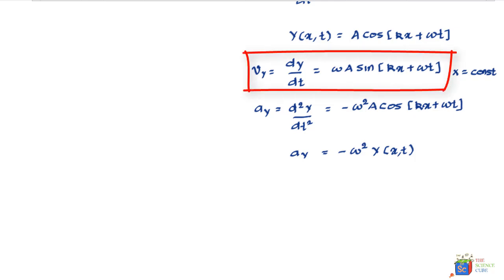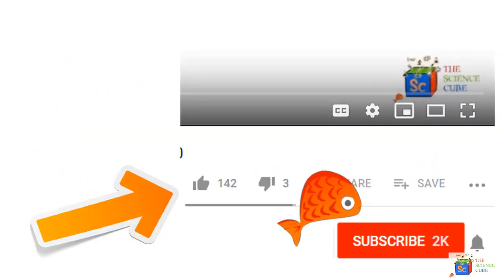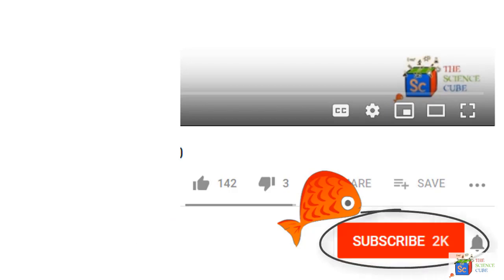This equation shows that the transverse velocity of a particle varies with time as expected for simple harmonic motion. The maximum transverse particle speed is ωA, since the sine function attains a maximum value of one. Also note that the maximum particle speed can be greater than, less than, or equal to the wave speed. If you liked this video, please give it a thumbs up and subscribe to this channel for more interesting videos.